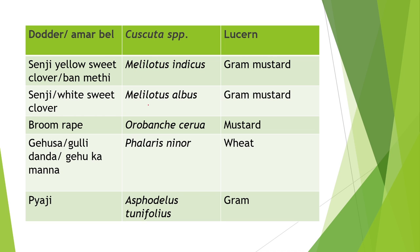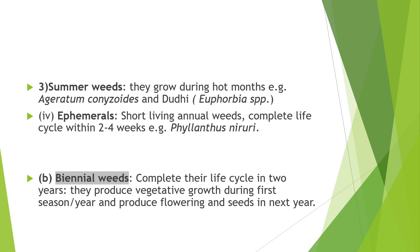Benmethi yard — Melilotus indicus, found in gram and mustard. Broom rape — Orobanche species, found in mustard. Gehusa — Phalaris minor, a mimicry weed of wheat. And Piagi — Asphodelus tenuifolius, found in gram fields.